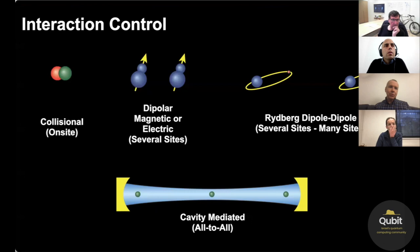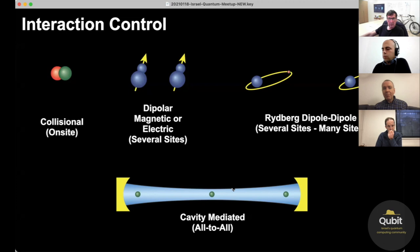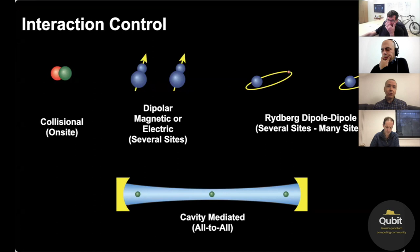So in terms of interactions that you control in these systems, you have many possibilities. So you can either have atoms collide with each other. That's direct collisional interactions. You can have a dipolar magnetic or electric molecules or atoms that can interact with each other through dipolar interactions. We'll hear much more about the Rydberg dipole-dipole interactions, or something that people have also used is to try to put these lattice systems into cavities and have light bounce back and forth between them to engineer kind of all-to-all interactions in the system.